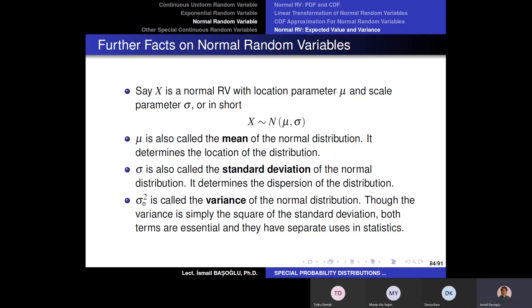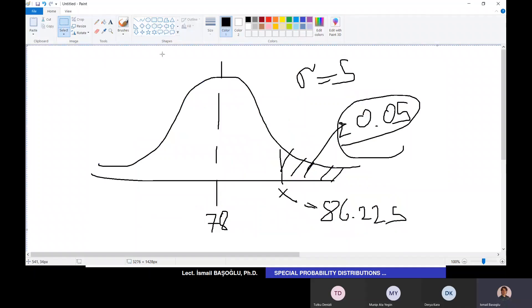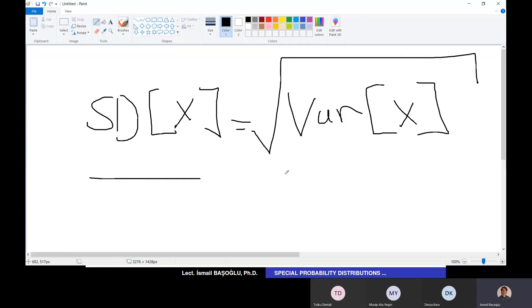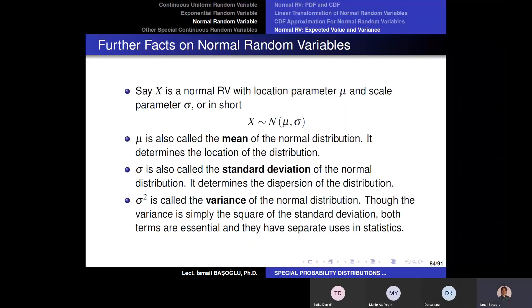However, these two terms, both sigma square and sigma, or both standard deviation and variance, they have important properties related to statistical studies. These two concepts, they are both essential, even though one of them is simply the square root of the other one and the other one is square of the other one. They are both important concepts in statistical studies. So you need to know the term standard deviation, which is the square root of the variance. So we can simply write it like that: The standard deviation of a random variable is equal to the square root of the variance of that random variable. So you need to learn the definition of standard deviation.